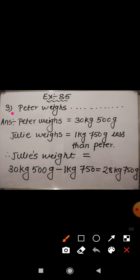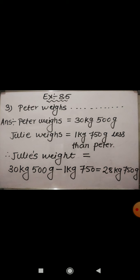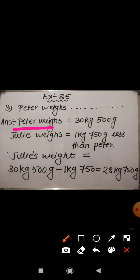The question is: Peter weighs 30 kg 500 gram and Julie weighs 1 kg 750 gram less than Peter. Then what is Julie's weight? What is given to us? Peter weighs 30 kg 500 gram — this is the weight of Peter. And Julie weighs 1 kg 750 gram less than Peter. Then what will be Julie's weight?